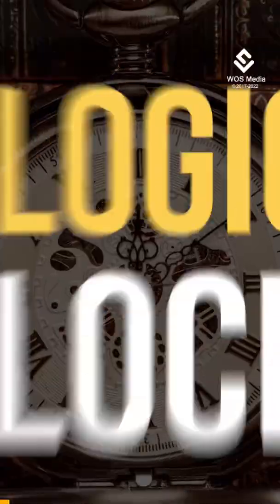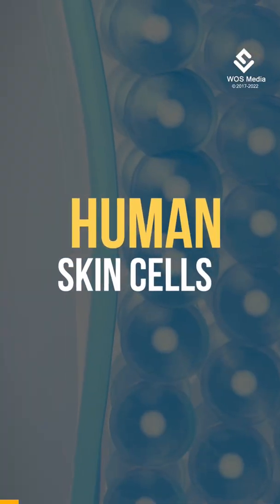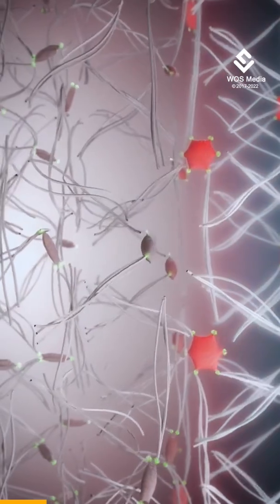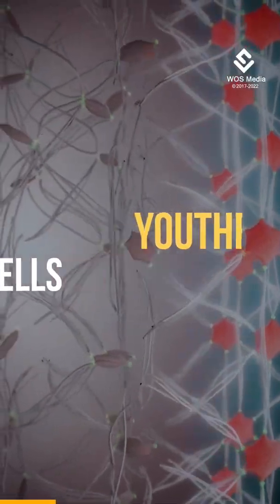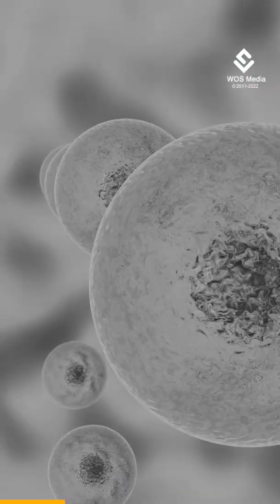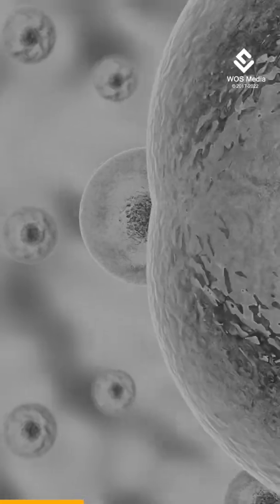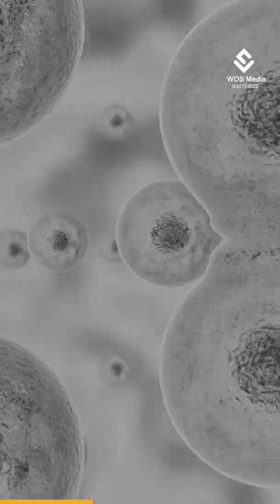Scientists have rewound the biological clock of human skin cells to make them act 30 years younger. The partially rejuvenated cells showed signs of behaving more like youthful cells in experiments simulating a skin wound. The potential applications of this technique depend on the cells not only appearing younger but functioning like young cells too.